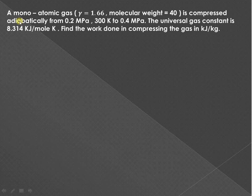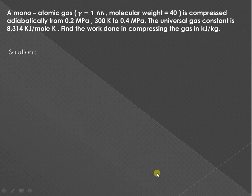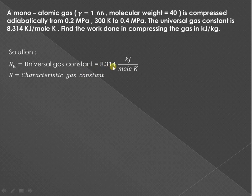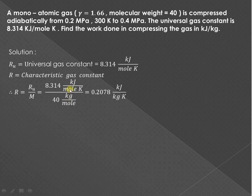In the next example, a monatomic gas with adiabatic index γ = 1.66 and molecular weight M = 40 is compressed adiabatically from 0.2 MPa and 300 Kelvin to 0.4 MPa. The universal gas constant Ru = 8.314 kJ/mol·K. The characteristic gas constant R = Ru/M = 8.314/40 = 0.2078 kJ/kg·K, with the mole units cancelling.